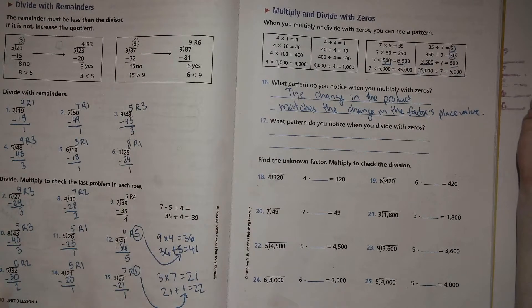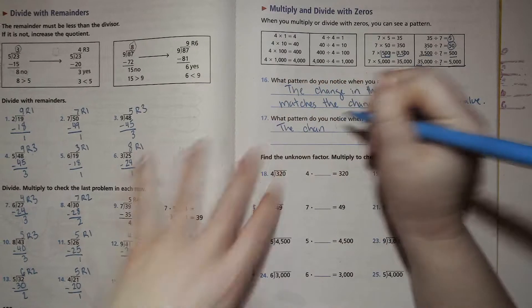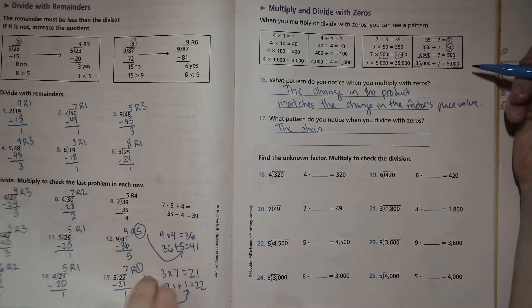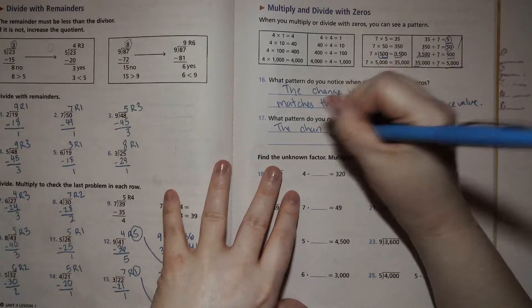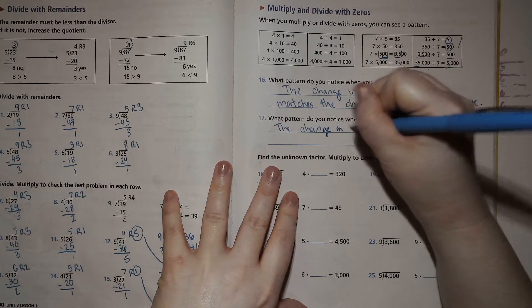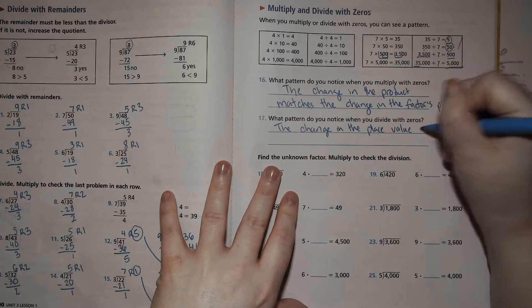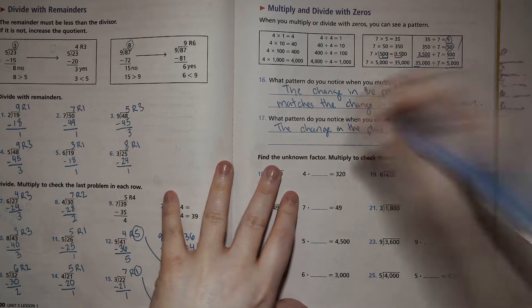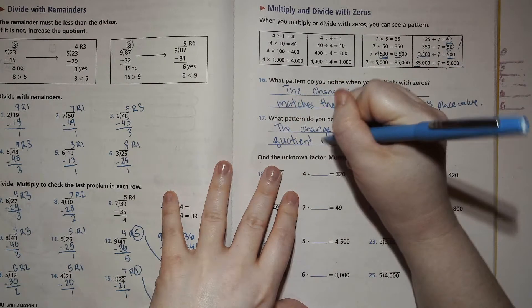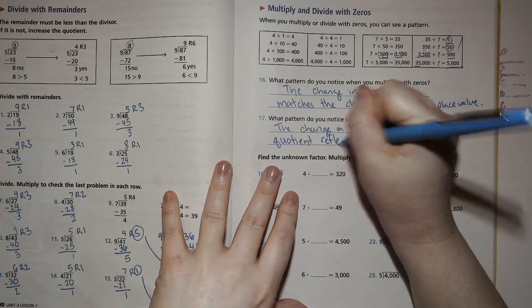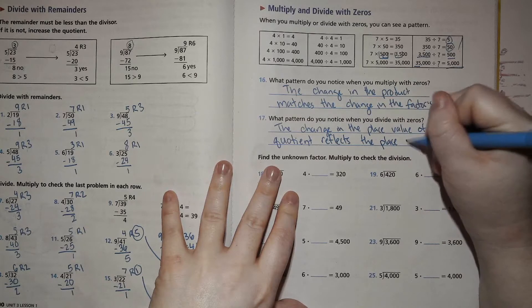So the change - let's practice using that fancy vocabulary. What's the answer in a division problem again? It's a quotient, right? So the change in the place value of the quotient reflects the place value.